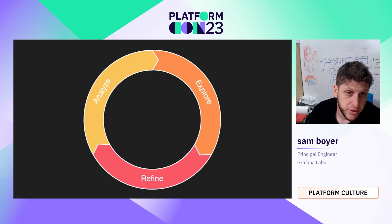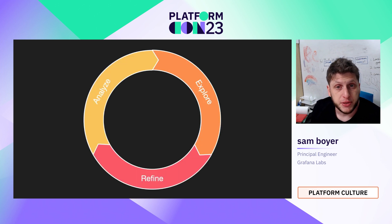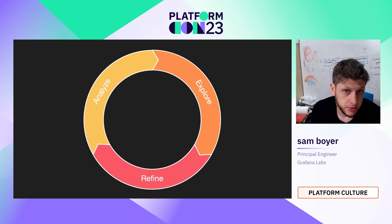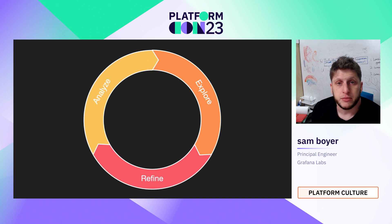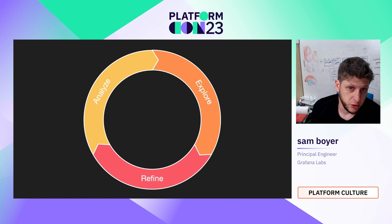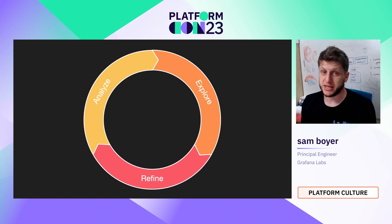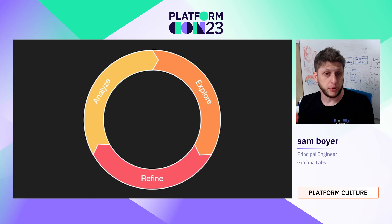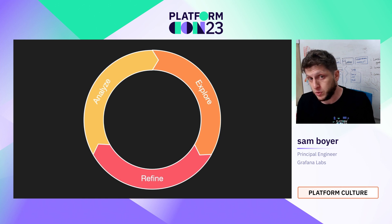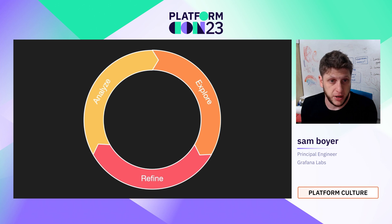Refine. In the refine phase, the engineer takes the mental models they built in explore and distills them into new knowledge objects and possibly new telemetry data. Depending on how her exploration went, Vivian might refine her mental model into new telemetry data like a new metric or log emission, or some new knowledge object like an alert specific to the app she owns, or a runbook or a dashboard, or actually maybe she fixed everything and there was nothing new to write. All these are possible.